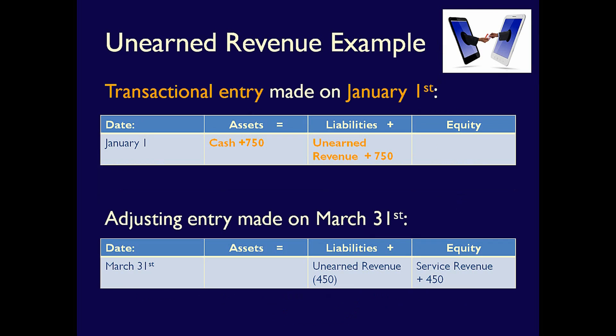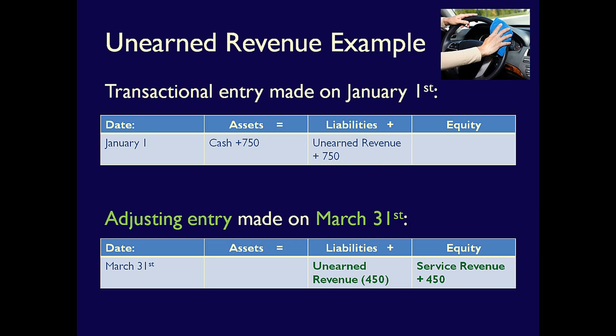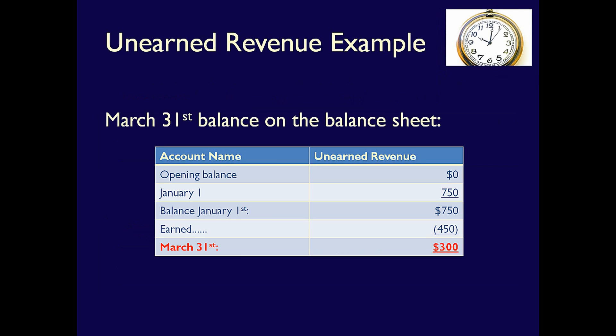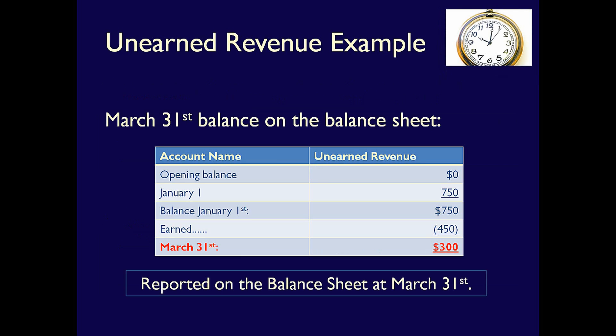Let's look at both entries together. The first entry is a transactional entry because it's an exchange with a third party that includes a paper trail, like an invoice — it records the receipt of cash and the fact that we owe the customer services in the future. The second entry is an adjusting entry because it adjusts the accounts before we publish the financial statements. It's an internal transaction with no paper trail; we do it to recognize that we settled the liability by providing a service and therefore earned revenue. What shows on the balance sheet? Only the balance at March 31st, which is a current liability of $300.